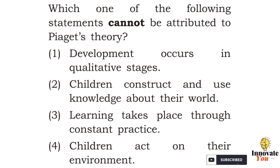The question asks for the wrong statement about Piaget's theory. According to option 1, development of a child only happens through qualitative stages — by looking at a particular thing, we can judge its quality. Option 2 states the child constructs his own knowledge and uses it in the world. Option 3 says learning takes place by practicing again and again. Option 4 says the child behaves as per the environment around him. The correct answer is option 3: learning takes place through constant practice, as this is not attributed to Piaget's theory.